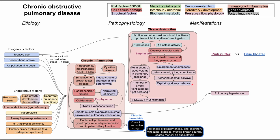This leads to a decrease in tethering of the small airways, which can lead to expiratory airway collapse. When patients are trying to expire, their airways kind of fall in on themselves and air gets trapped inside their lungs — leading to air trapping and hyperinflation. When you have hyperinflation, you have decreased ventilation and increased dead space, which also contributes to VQ mismatch.